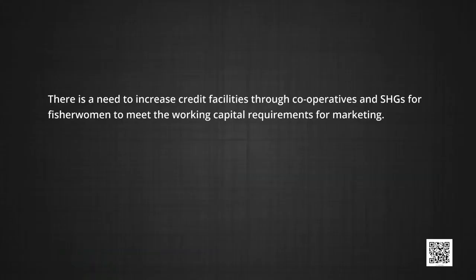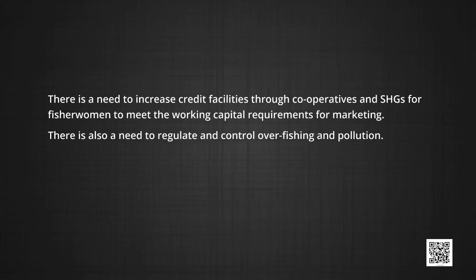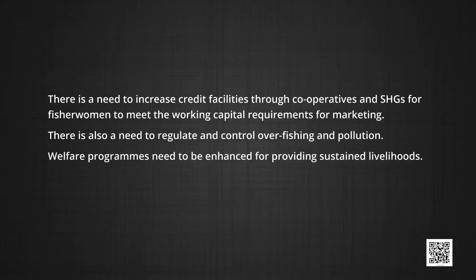A large section of fishing families is poor. Unemployment, low per capita earnings, absence of mobility of labor to other sectors, and high rates of illiteracy and indebtedness are some of the major problems the fishing community faces. Although women are not involved in active fishing, about 60% of the workforce in export marketing and internal marketing are women. There is a need to increase credit facilities through cooperatives and SHGs for fisher women to meet working capital requirements for marketing, and to regulate overfishing and pollution. Welfare programs need to be enhanced for providing sustained livelihoods.